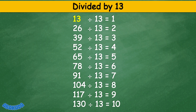Divided by 13: 13 divided by 13 equals 1, 26 divided by 13 equals 2, 39 divided by 13 equals 3, 52 divided by 13 equals 4, 65 divided by 13 equals 5, 78 divided by 13 equals 6, 91 divided by 13 equals 7, 104 divided by 13 equals 8, 117 divided by 13 equals 9, 130 divided by 13 equals 10.